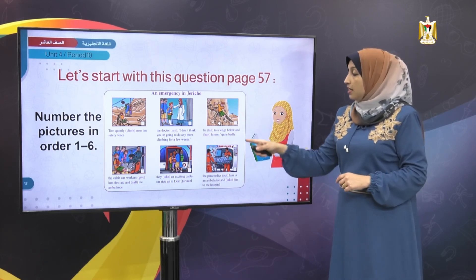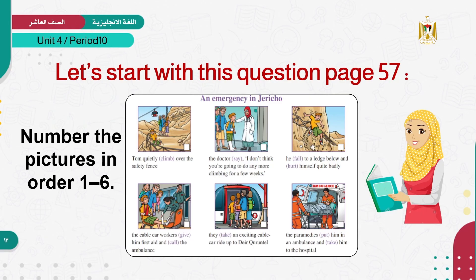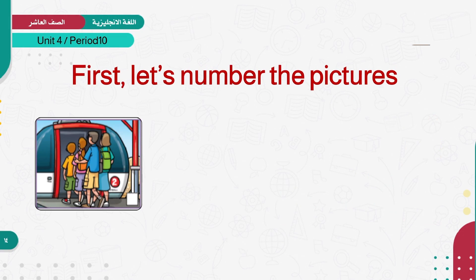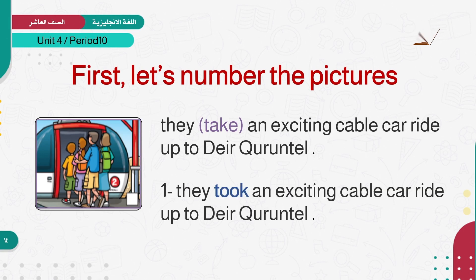So first, which picture comes first? Excellent. This is the first picture. Written below the picture: They take an exciting cable car ride up to their current hill — in Jericho. Since the story is in the past, we change the verb: they took. They took an exciting cable car ride up to their current hill.